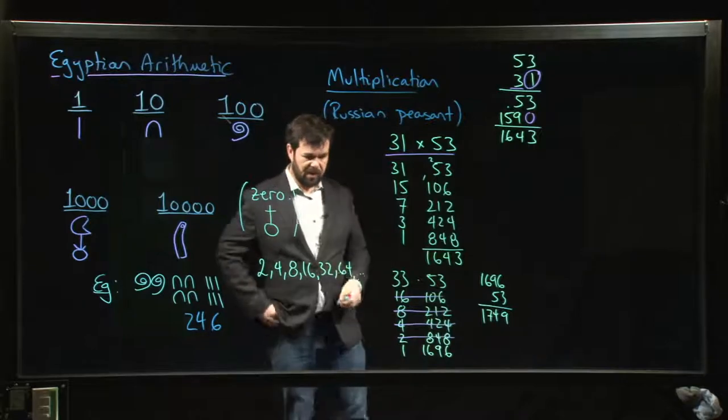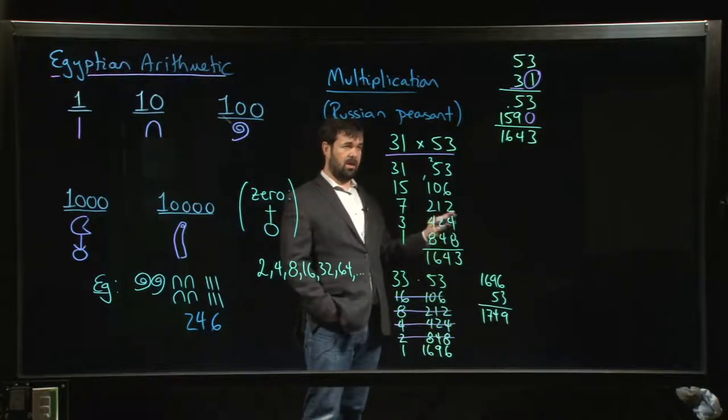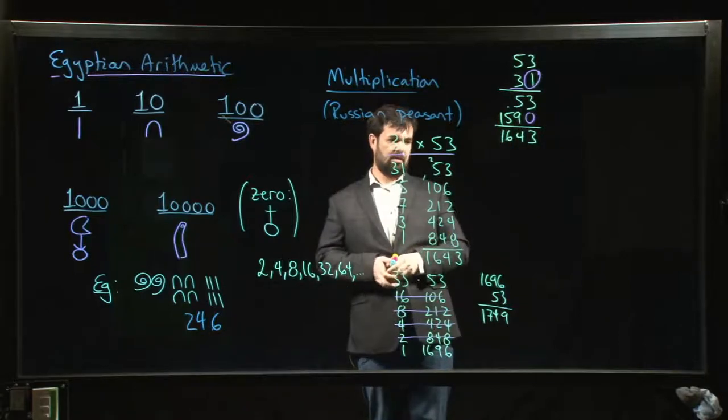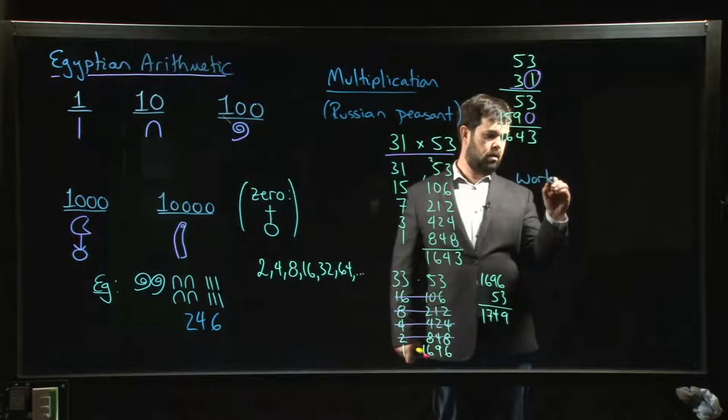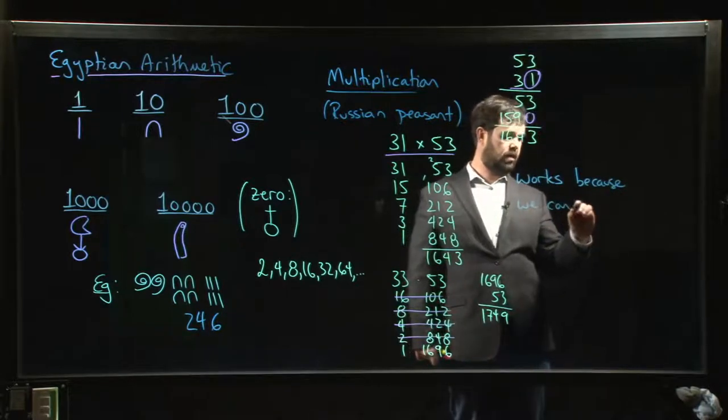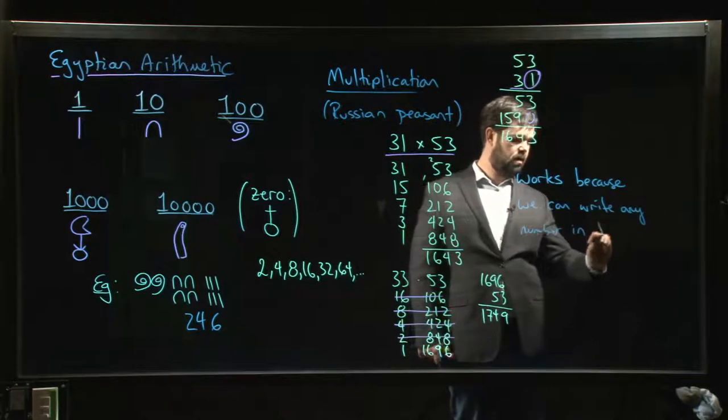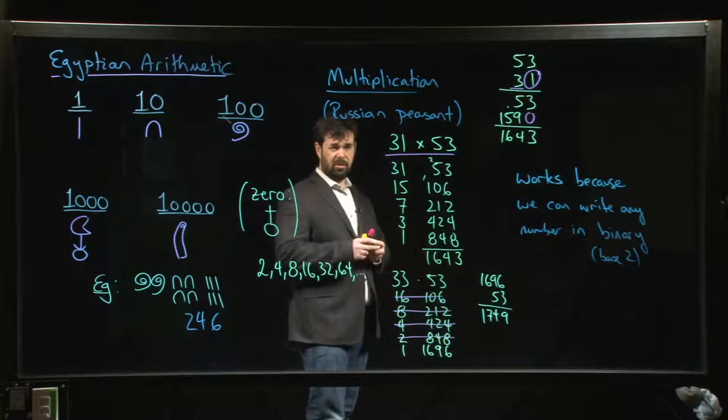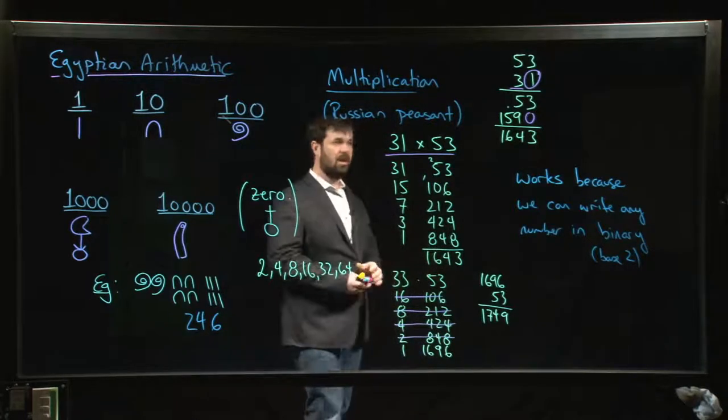This is the Egyptian or Russian peasant system. This is a multiplication method that shows up in a number of places. We'll play around with some examples. We'll see why it works. We're not going to just do some examples and check that the answer matches. We're going to try to understand exactly why this works. It turns out this works because we can write any number in what's called binary form, base 2, the same sort of number system that we use in computers. This turns out to be the number system underlying this Russian peasant method.